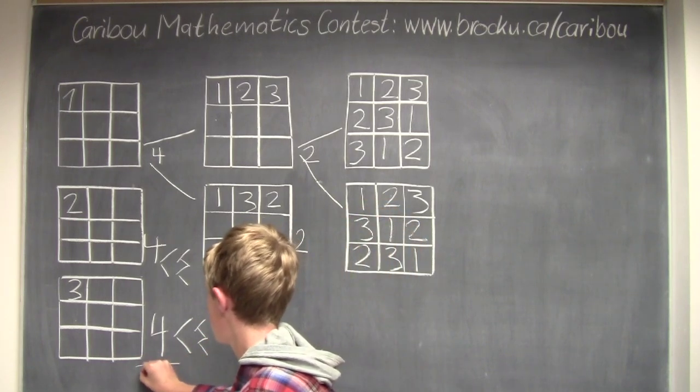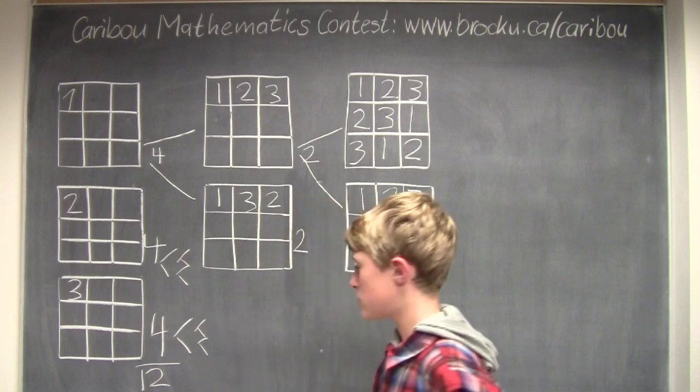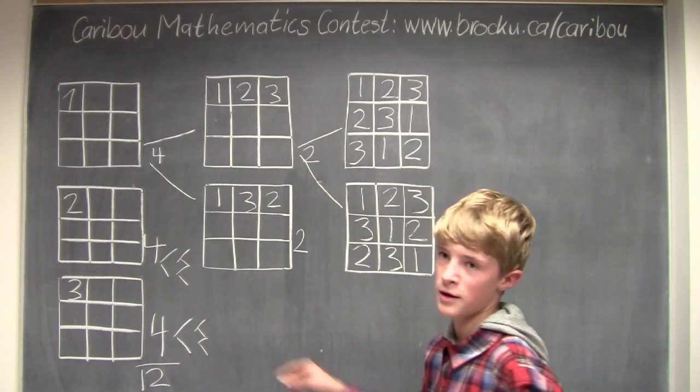So that means the total would be 12. So there would be 12 ways to fill in a grid.